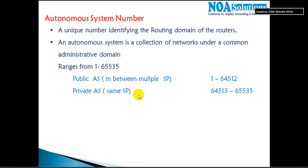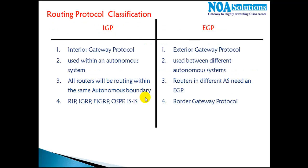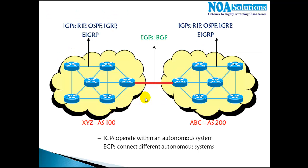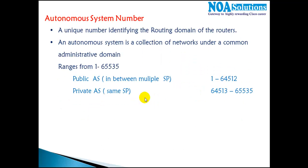In this section we'll see what an autonomous system number is, what exactly it identifies, and then we'll see the different protocol categories like IGP and EGP classifications. An autonomous system number is a number which identifies a routing domain of routers, or we can say it is a collection of networks.